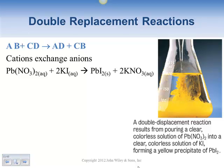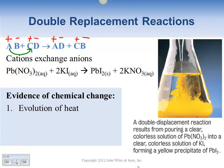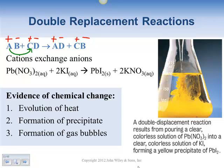Double displacements are what we did in lab. You have A and B, C and D, making the other combinations — the plus and minus switch partners yielding AD and CB. Evidence of a double displacement reaction includes heat, solid precipitates, and/or gas bubbles.